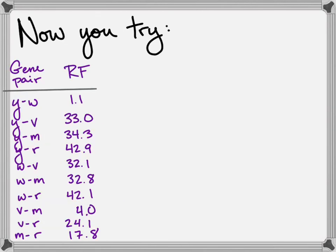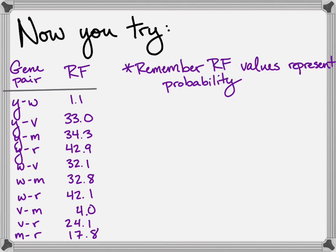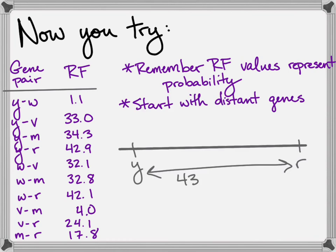Here's another problem for you to try. We have a bunch of gene pairs - this is five genes total and their corresponding RF values. I want you to try and place these genes onto a chromosome. Now, things to remember, these are probabilities. So they're not a unit with a specific distance. You can't take a ruler and map out 42 millimeters or something to do this. I want you to start with distant genes. I'm going to get you started with the Y and the R being furthest apart. So take it from there. Go ahead and pause the video and try to place the rest of the genes on this chromosome.